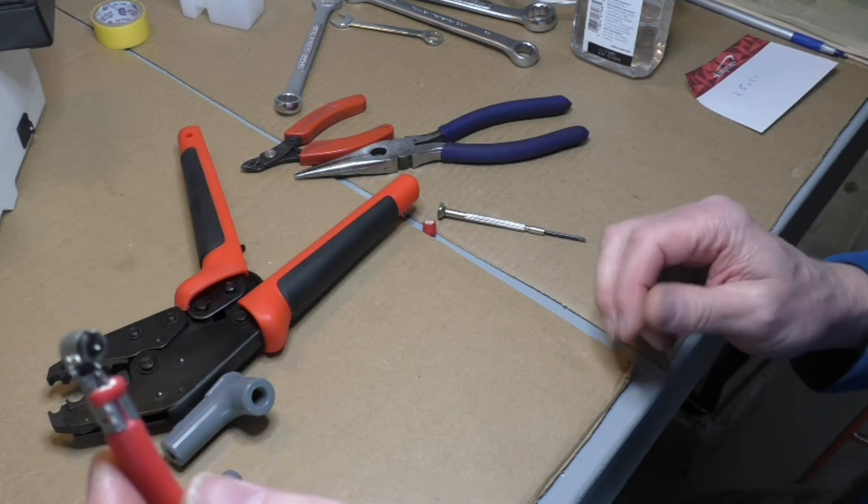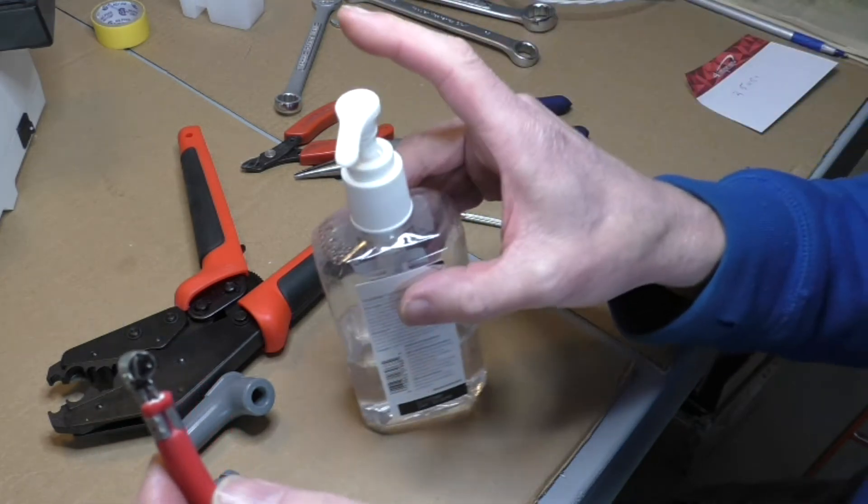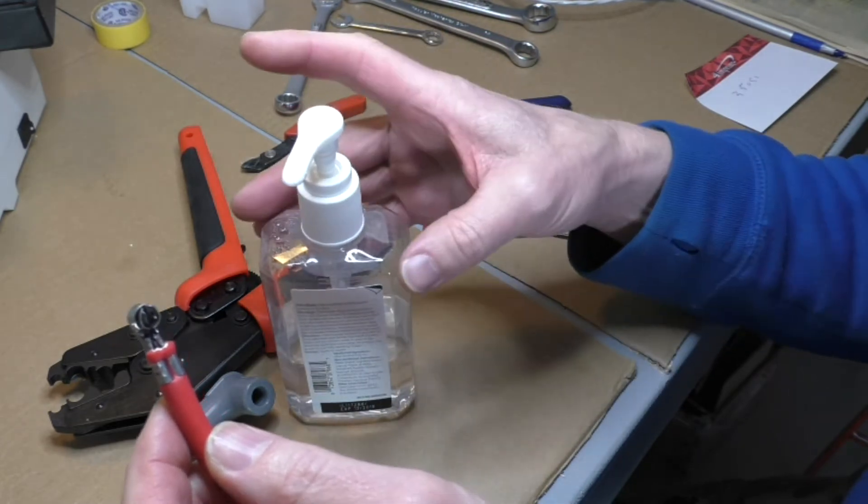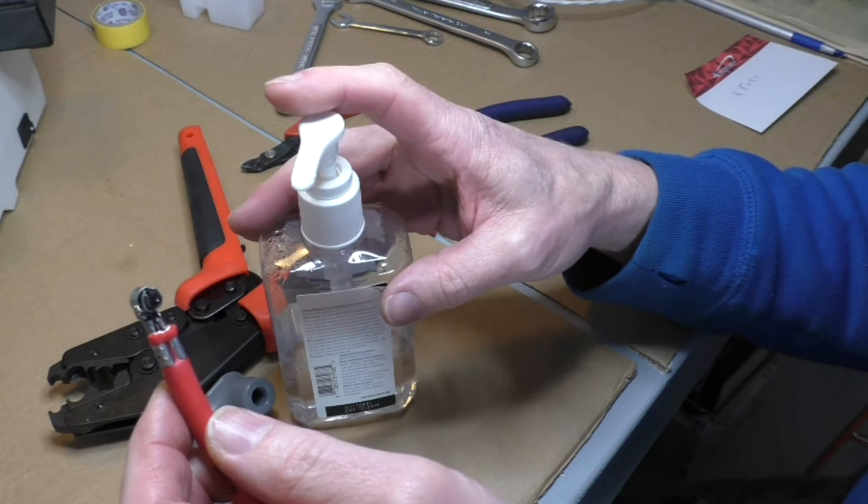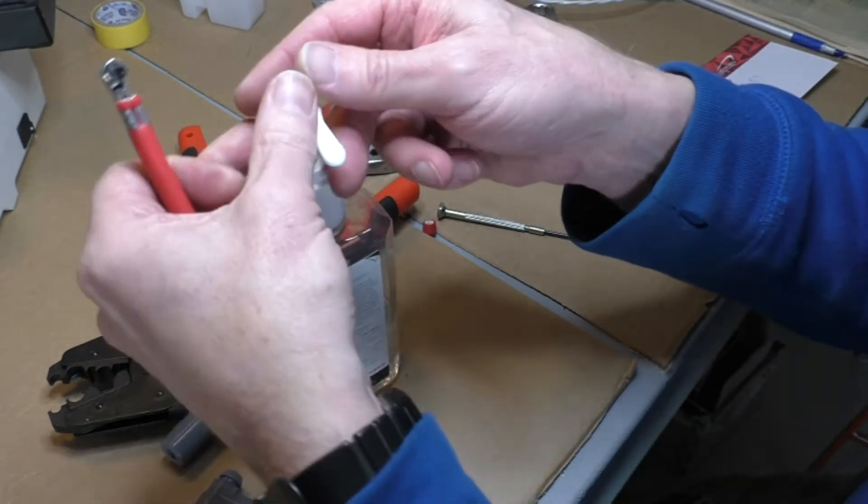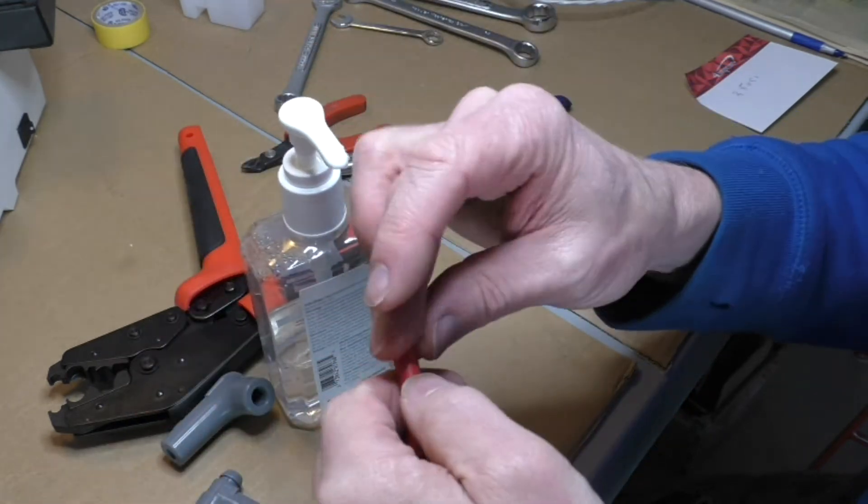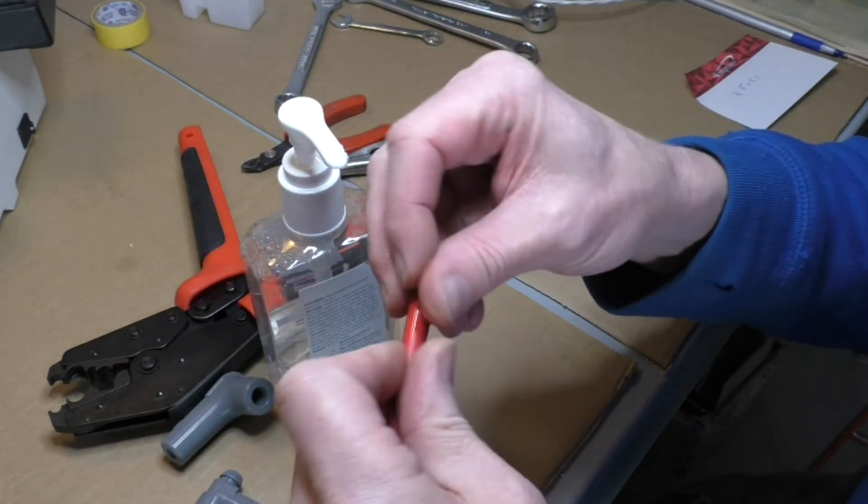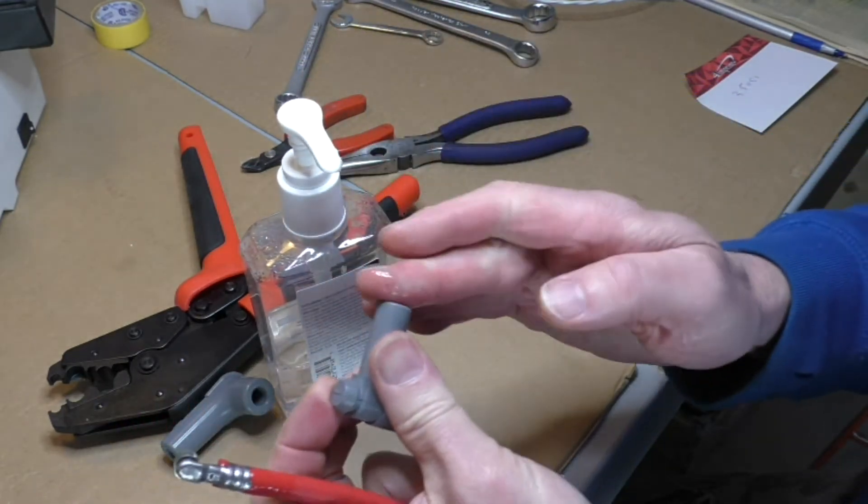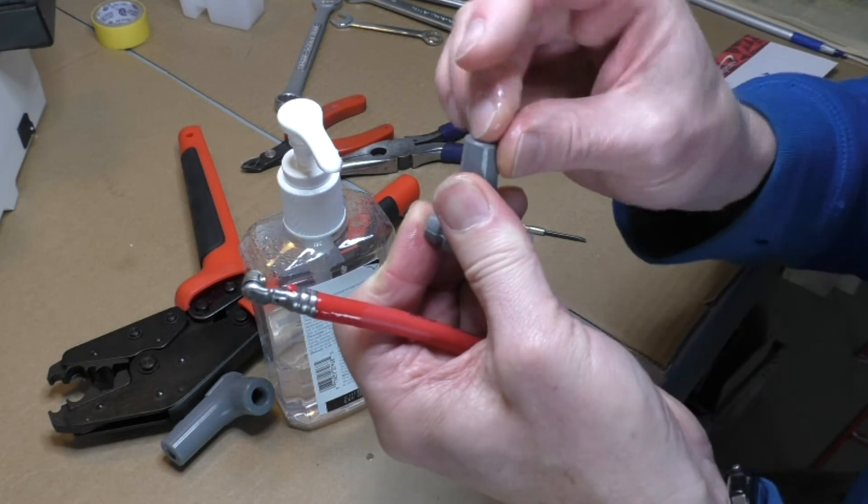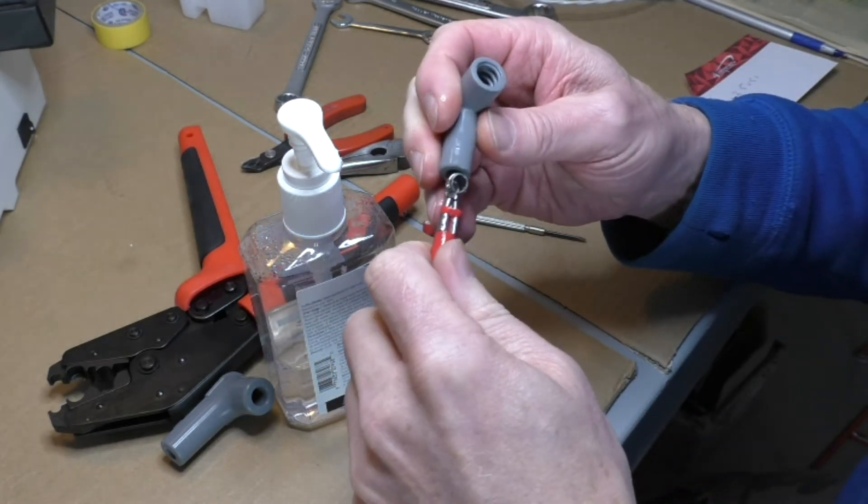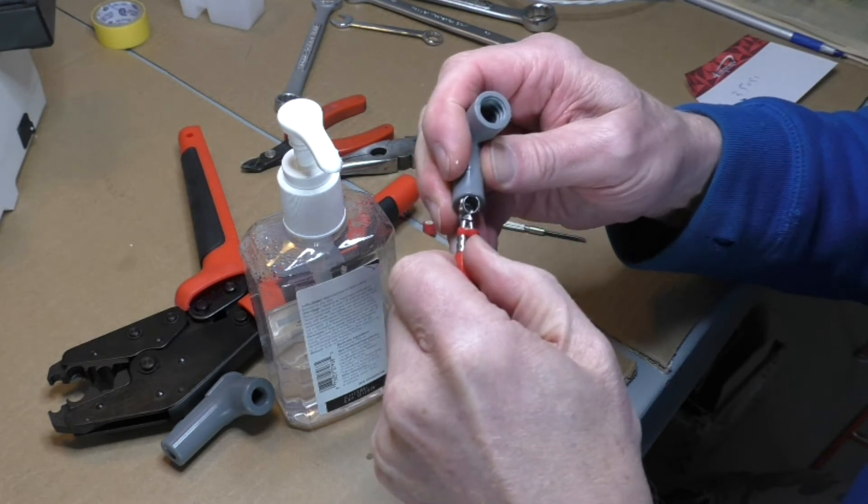Then to put the boots on, we want to lubricate the cable and the boot with a glycerin based hand sanitizer. Seems to work best because it'll evaporate for you. Just want to lubricate that. Lubricate the inside of the boot as well. If you don't do this you'll have a bear of a time getting the boot over here.